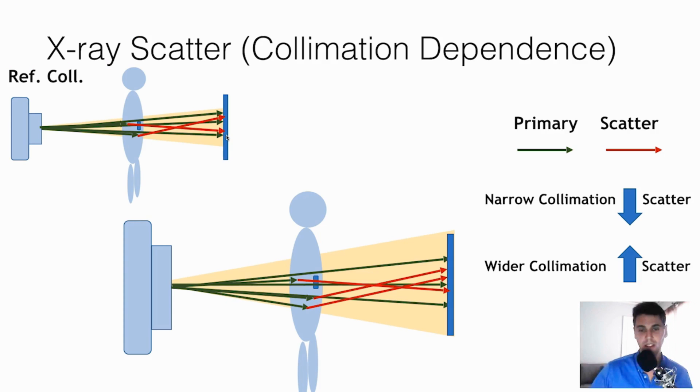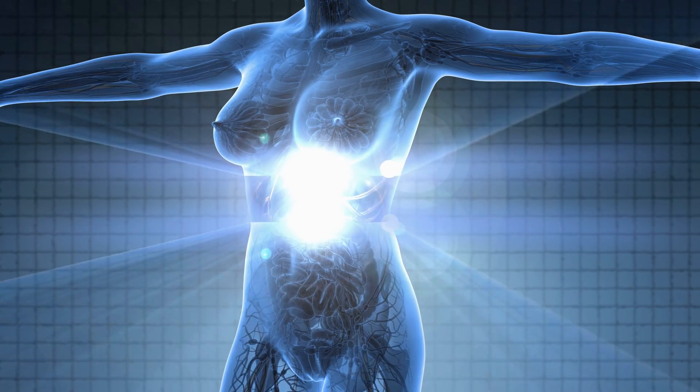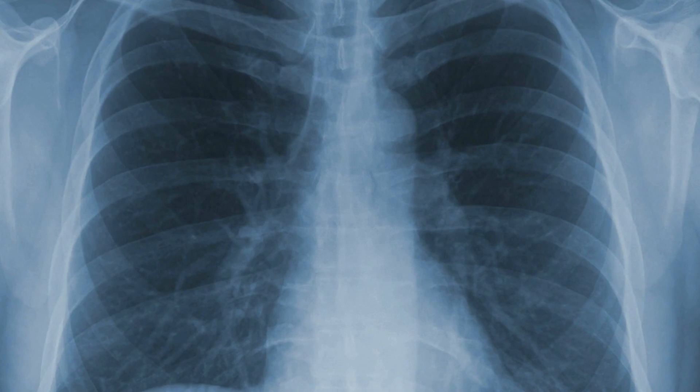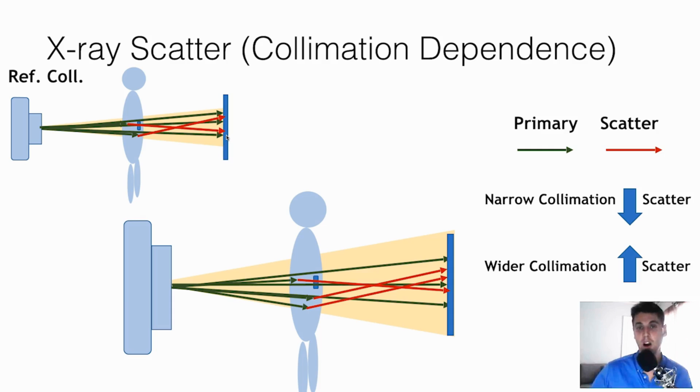So in general, when you just need to see a certain part of the anatomy, it always is beneficial to hone in and to collimate down such that we irradiate the minimum region in order to see all the anatomy of interest for that clinical task.